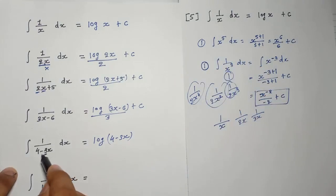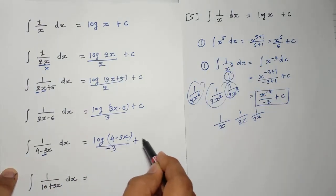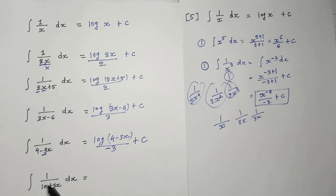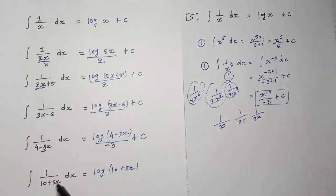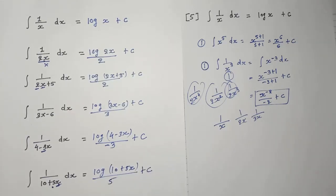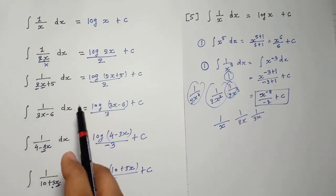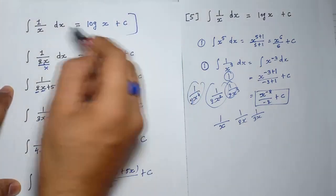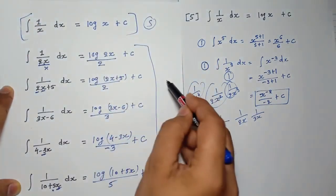Same here: 1 divided by 10 plus 5x — answer is log(10 + 5x). Here you can see 5 is multiplied by x, so divide by 5. This is the basic rule: whatever is multiplied by x, divide by it. Actually this is rule number 5.